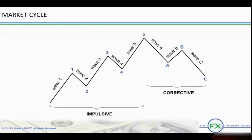In this example, the A, B, C sequence corrects the one, two, three, four, five sequence. Another way of saying this is, at any time a price in the market moves in the direction of the larger trend, it will form a five-wave sequence, followed by a three-wave sequence, which moves against or corrects the trend.